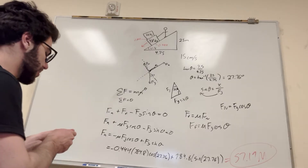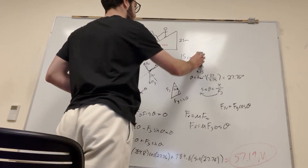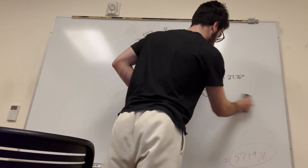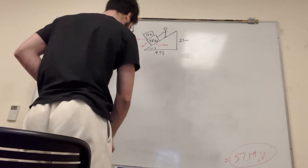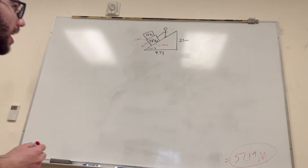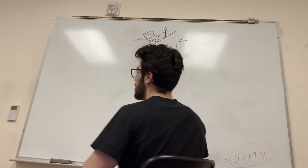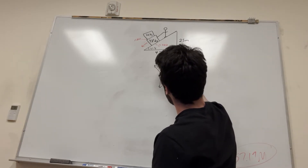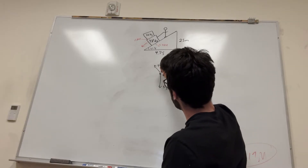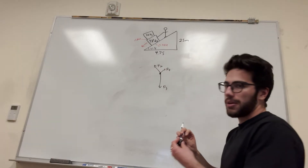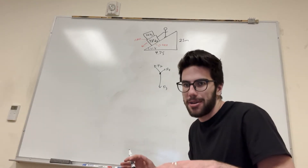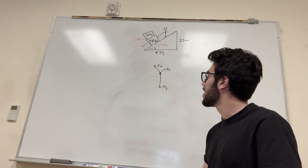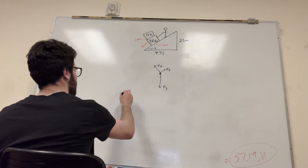Part two: what is the magnitude and direction of the force on the upper box? We need another free body diagram. On the upper box we have force gravity, force normal, and force of friction. This box is also not accelerating — it's stuck to the top of the other box — so the sum of all forces is equal to zero.